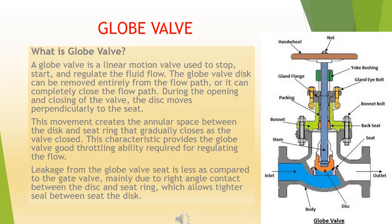What is a globe valve? A globe valve is a linear motion valve used to stop, start, and regulate fluid flow. The globe valve disk can be removed entirely from the flow path, or it can completely close the flow path. During the opening and closing of the valve, the disc moves perpendicularly to the seat. This movement creates the annular space between the disc and seat ring that gradually closes as the valve closes.